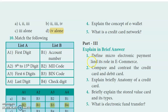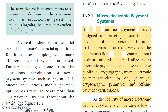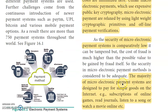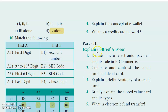Part 3, first question: Define micro electronic payment and its role in eCommerce. Page 231: Macro electronic payments use expensive public cryptography, but micro electronic payments use lightweight cryptographic primitives and offline payment verification. Examples include subscriptions to online games, reading journals, listening to songs, watching a movie online, and simple goods online payment.